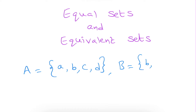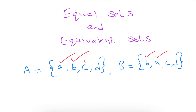In set B, the elements are B, A, C, D. Now, if we compare set A and set B: element A is in set A, and element A is in set B also. Element B is in set A, and in set B also. Element C is in set A, and in set B also. Element D is in set A, and in set B also. Whatever elements are present in set A, the same elements are present in set B also.